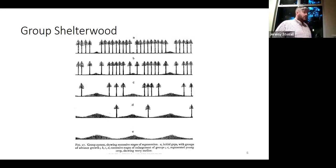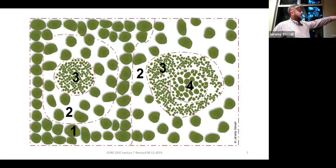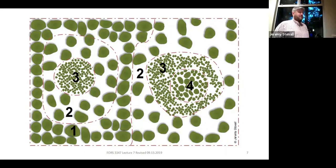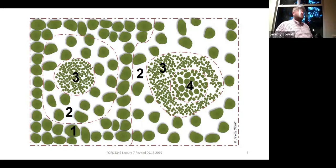Looking at a diagram of this, you have different areas in different stages: area one is the intact mature overstory needing an establishment cut; area two has lower density where an establishment cut has already been performed; area three is where a removal cut may have just been done. From a wildlife perspective, if you've got a species needing dense cover — it's there. Browse near the ground — it's there. Large trees with open mid-story, or just big trees — it's all there. That builds in the idea of diversity.